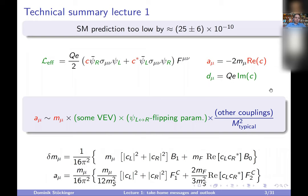The theory description of g-2 is given in terms of an effective Lagrangian which couples the muon left and right via the sigma mu-nu matrix to the field strength tensor. We can describe uniformly g-2, but also the electric dipole moment as the real or imaginary part of that Wilson coefficient. One of the key insights from last time was that g-2 is given by those four factors in the gray box.